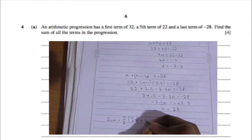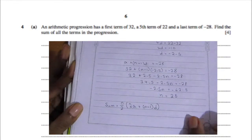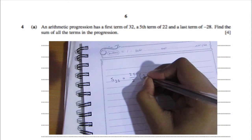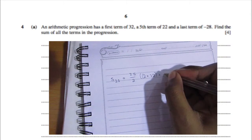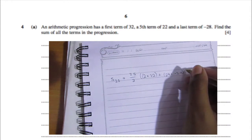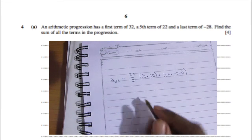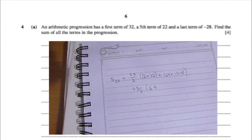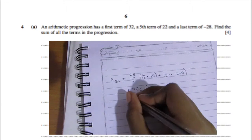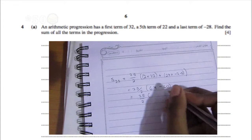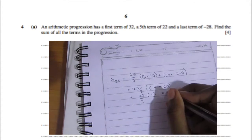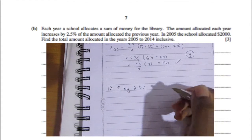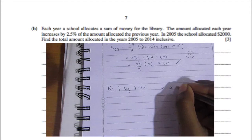Now find the sum using S = n/2 × (2a + (n−1)d). So: 25/2 × (2×32 + 24×(−2.5)) = 25/2 × (64 − 60) = 25/2 × 4 = 50. That's four marks. Make sure to show all your working out — you get most of your marks from the working, not just the final answer.